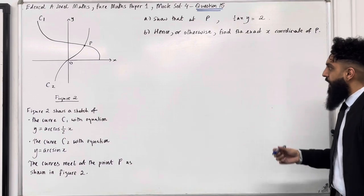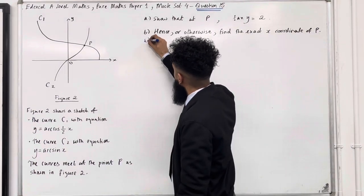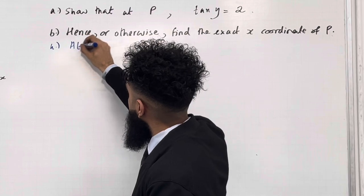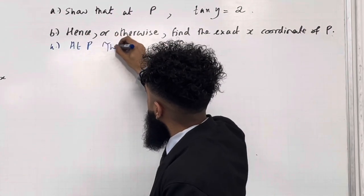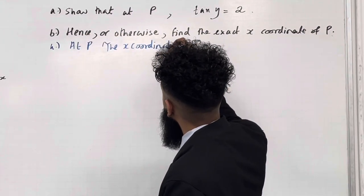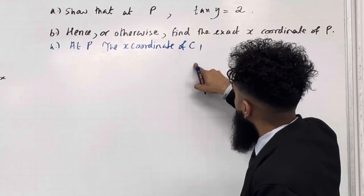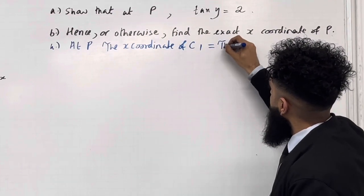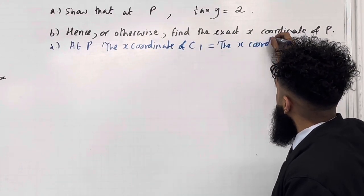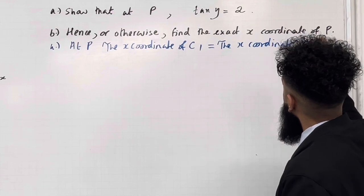Let's have a look at the solution to Part A. So we know that at P, the x-coordinate of C1 is equal to the x-coordinate of C2.